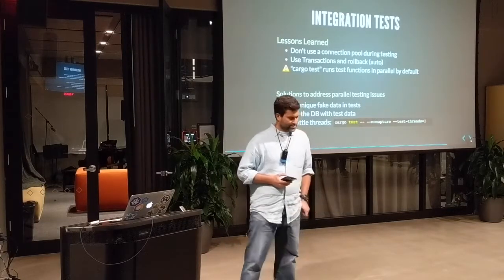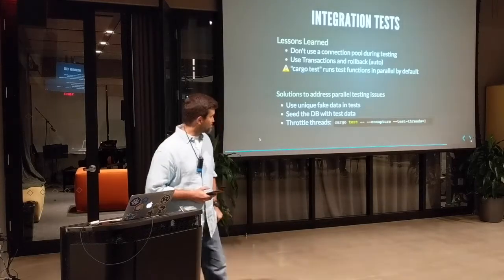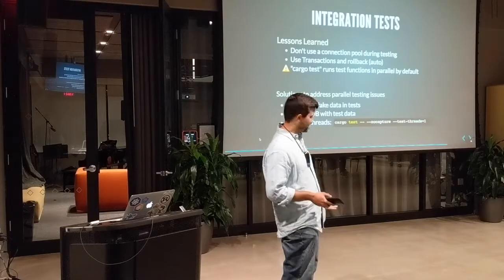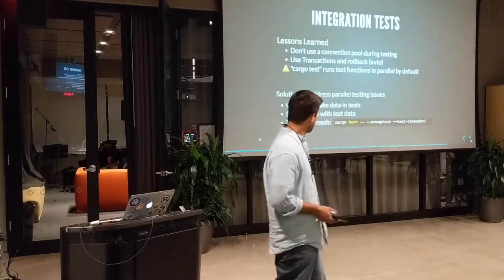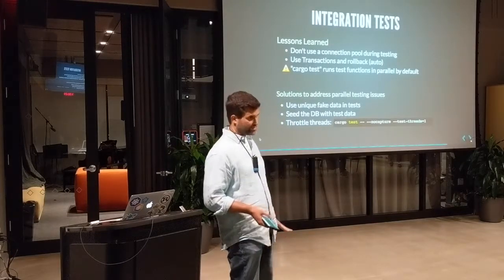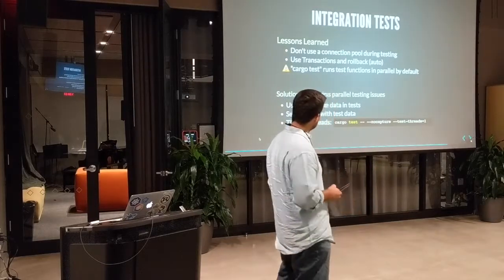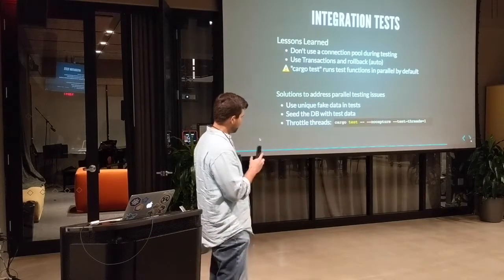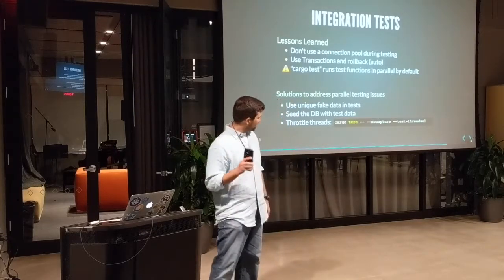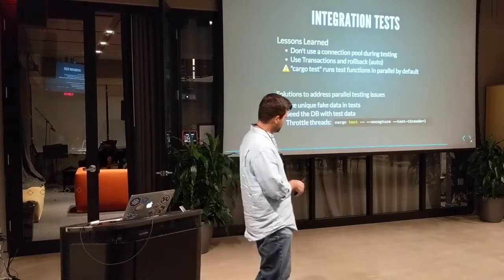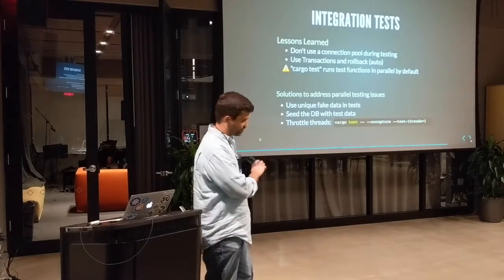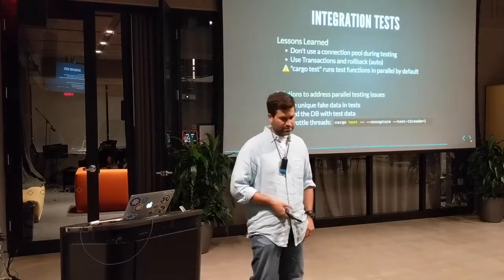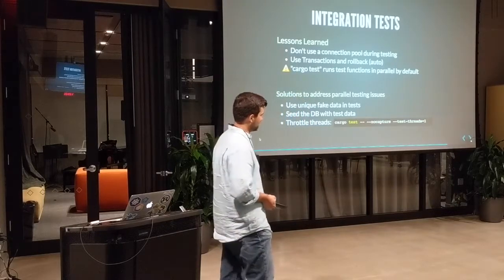Another thing: Rust runs tests in parallel by default, which is very fast. But I've gotten into trouble with it — I've run into database issues, problems with connections, and I think deadlock issues, all related to tests running in parallel hitting tables at the same time. Running in parallel seems great except when you're working with database operations. Solutions I found: use unique fake data for each test (there are good libraries for generating fake data), seed the database with test data if you want shared state across tests, and throttle the number of threads using cargo test with the flag `-- --test-threads=1` to run all tests sequentially.